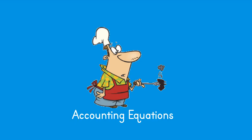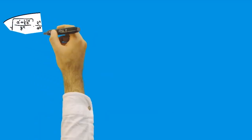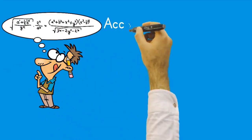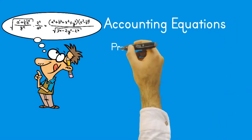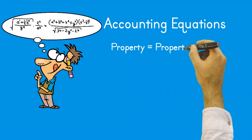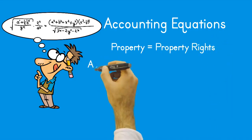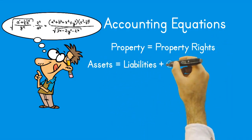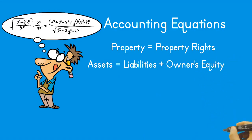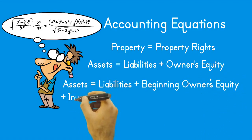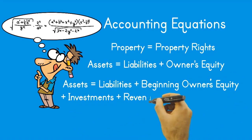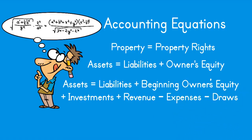This recipe is actually a simple equation that lays the foundation on which double entry bookkeeping is built — called the accounting equation, also referred to as the balance sheet equation. It may be expressed in three forms: 1. Abbreviated: Property equals property rights. 2. Expanded: Assets equals liabilities plus owner's equity (capital). 3. Fully expanded: Assets equals liabilities plus beginning owner's equity plus additional owner investments plus revenues minus expenses minus draws.